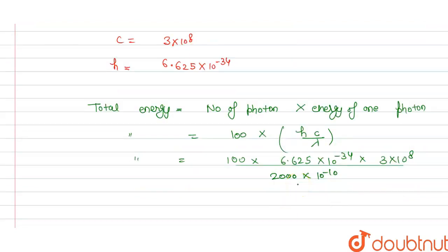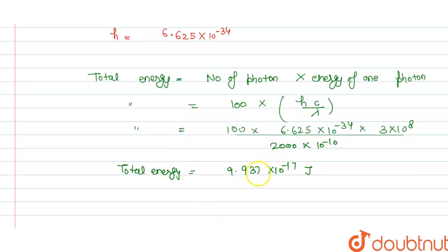So we have total energy is equal to 9.937 into 10 power minus 17 joule on solving this. So we have to calculate it into the electron volt.